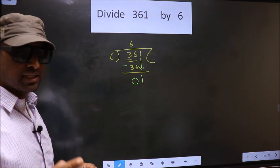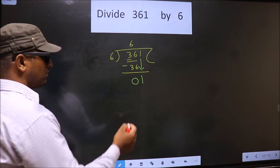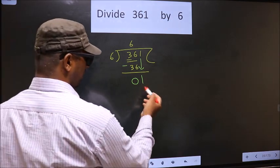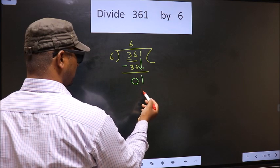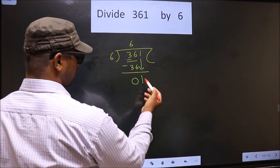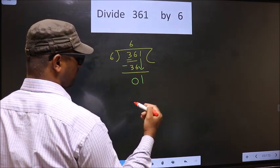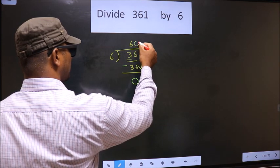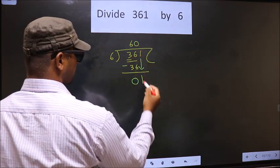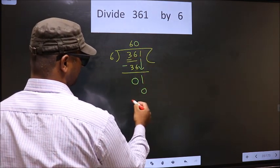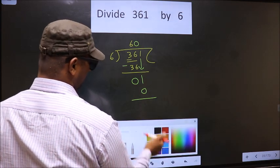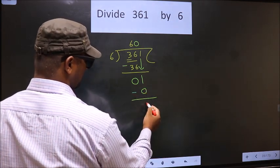Instead, what you should think of is, what number should we write here? If we write 6, 6 is larger than 1. So what we do is we take 0 here. So 6 into 0 is 0. Now you subtract. 1 minus 0 is 1.